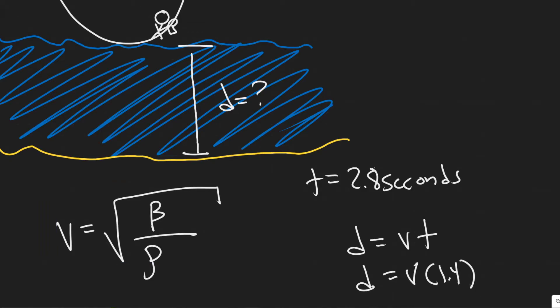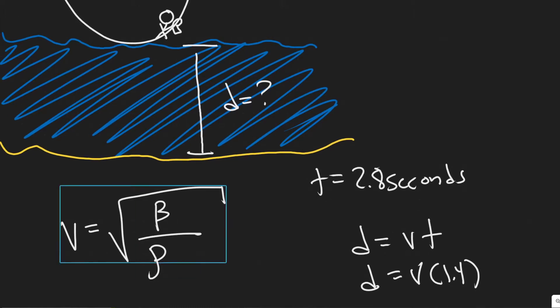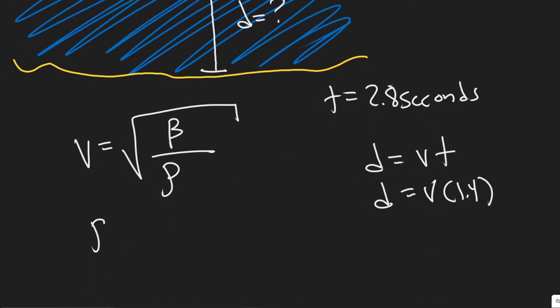The velocity of sound, the velocity of this echo sound, is going to be equal to the square root of the bulk modulus divided by the density of the liquid it's traveling in.